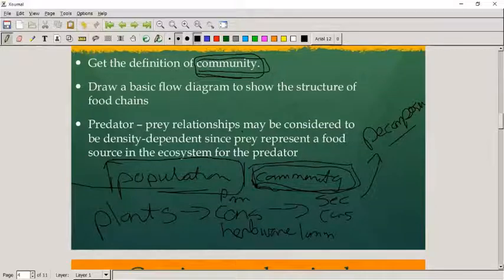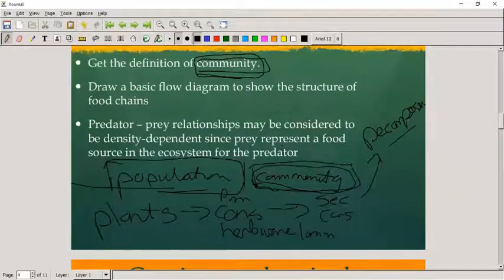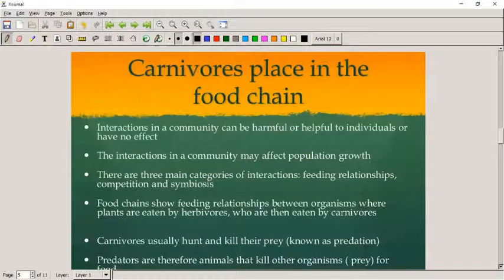Predator-prey relationships may be considered to be density dependent since prey represent a food source in the ecosystem for the predator. The more predators there are, the more prey they eat. But as prey declines, that becomes a density dependent factor, and predators have to decline because there's not enough food.